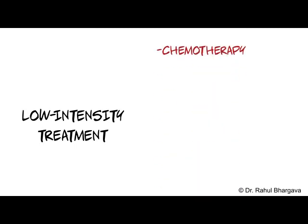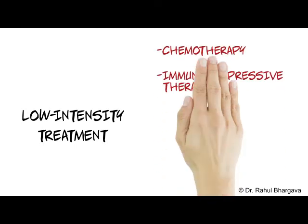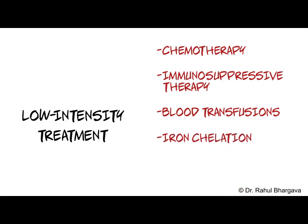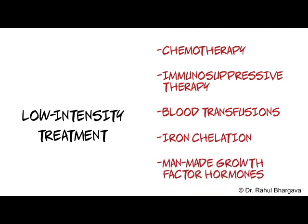A low-intensity treatment may include chemotherapy, immunosuppressive therapy that tries to stop the immune system from attacking the bone marrow, blood transfusions, iron chelation to reduce the excessive iron in the blood, and man-made growth factor hormones that encourage the bone marrow to make blood cells.